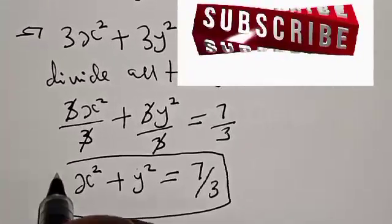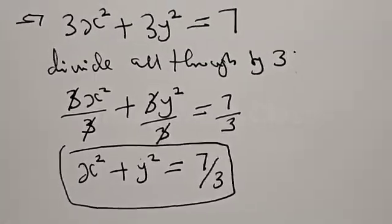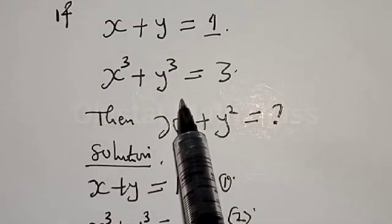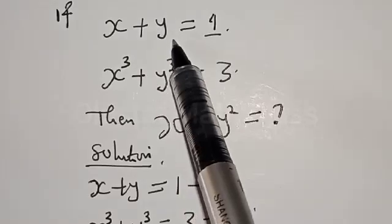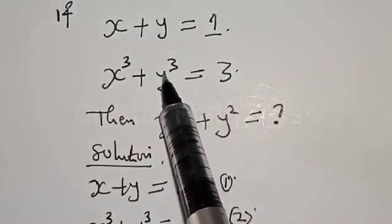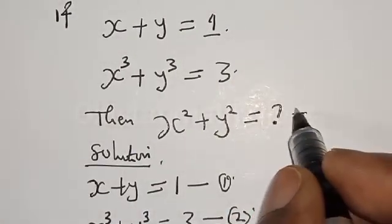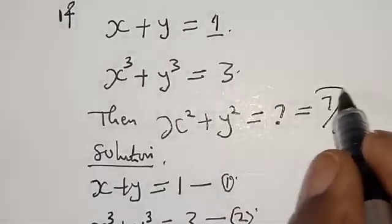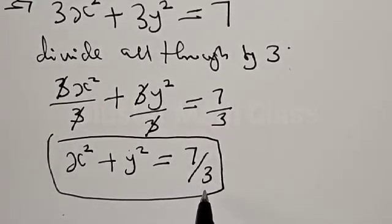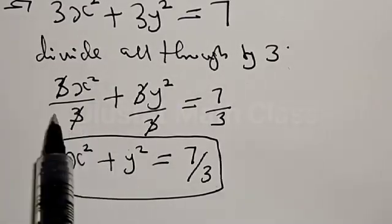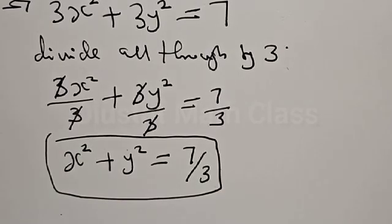If you have enjoyed the class, please don't forget to like, share, comment, and subscribe. From the question, we were asked to find the value of s squared plus y squared. Given s plus y equal to 1 and s cubed plus y cubed equal to 3, we've gotten the value of s squared plus y squared to be equal to 7 over 3, which is our final answer. Thank you, and if you have a better solution, kindly let me know in the comment section.